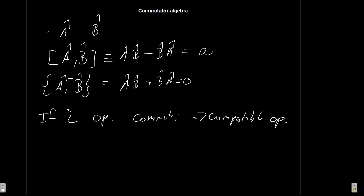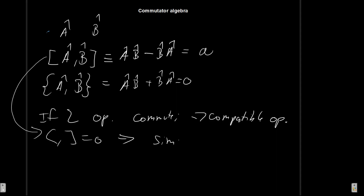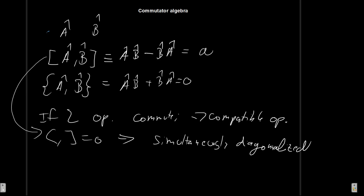Also, since we discussed eigenvalues and eigenvectors in a previous video, it is good to note that if two operators commute — if their commutator is zero — they can be simultaneously diagonalized. This means they share eigenfunctions, which is going to be extremely important when we deal with angular momentum. It will get much clearer when we begin applying it.